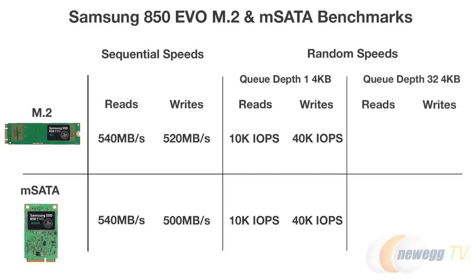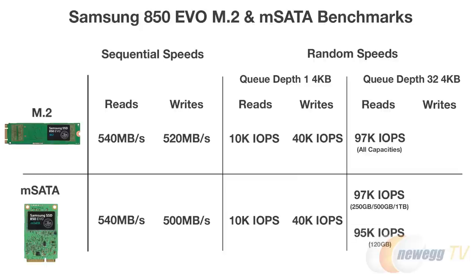Jumping to Q-Depth 32, both controllers breathe a little more and give us slightly different numbers. The M.2 drive pulls 97K on random reads across all capacities. The 250 gigabyte, 500 gigabyte, and 1 terabyte mSATA drives also pull 97K IOPS, while the 120 gigabyte model pulls 95K IOPS. The M.2 drive pushes 89K on random writes and the mSATA version pushes 88,000 regardless of capacity.